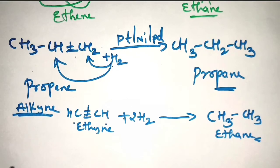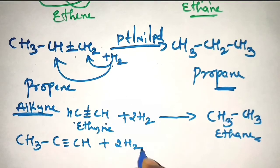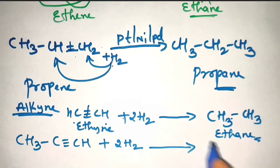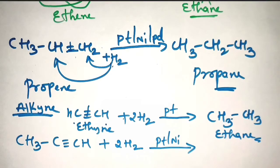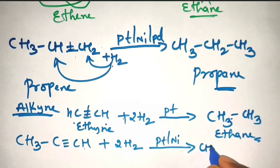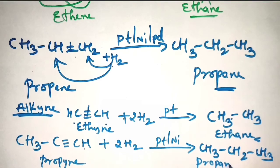One more example you can take: propyne, CH3–C≡CH. Here also you have to add 2 H2. You need to write either platinum, nickel, or palladium as a catalyst. Here 2 H2 are added, so you can write CH3CH2CH3 — that is propane. From propyne, what you have prepared is propane.